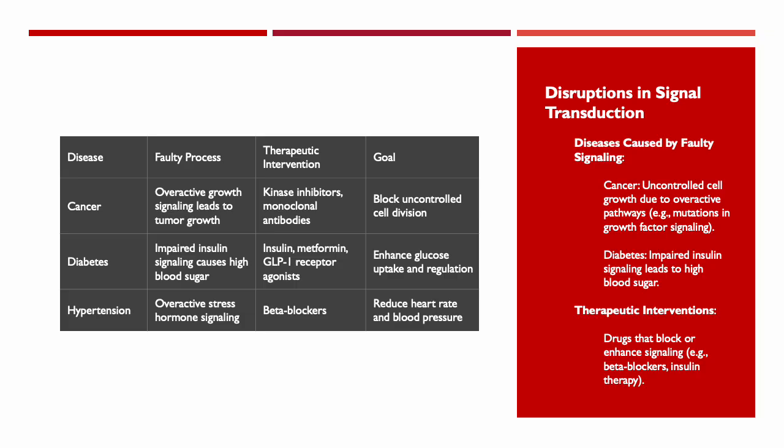Some disruptions in signal transduction. If we're talking about cancer, there is uncontrolled cell growth due to overactive pathways. For example, mutations in growth factor signaling. Because normally, growth factors, proteins, are binding to receptors on the cell, triggering a cascade that signals our cell to divide when needed. Now, if you have mutations, if you have mutations in genes like an oncogene, like the RAS gene, this will cause the signaling pathway to stay on instead of off, even without growth factors, leading to uncontrolled cell division and tumor growth. Examples of interventions, like you can see here, is kinase inhibitors. These will block overactive signaling proteins, preventing excessive cell division.